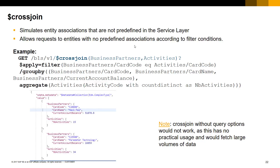The GroupBy will set the properties that define the grouping and be returned for each result value: CardCode, CardName, and CurrentAccountBalance from the business partners entity. The aggregate will set the properties to be aggregated — in our case, the number of distinct activities on the activity entity for the same CardCode. Please note that crossjoin must be used in conjunction with query filter options; without query options, crossjoin will not work as it has no practical usage to get large volumes of data under complex associations.